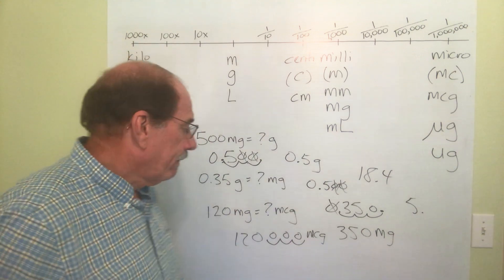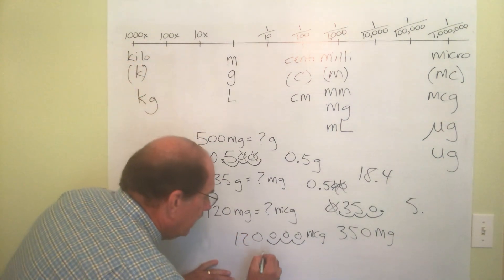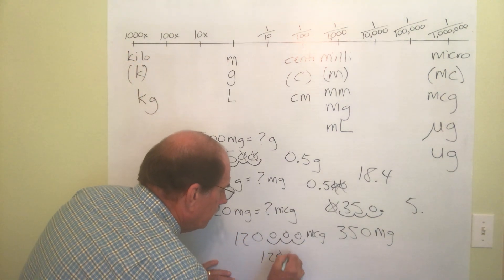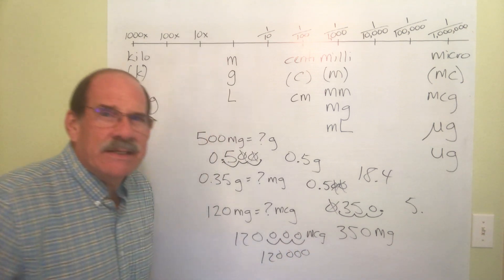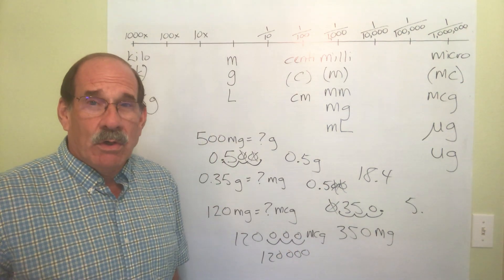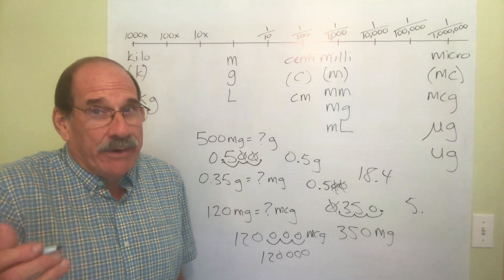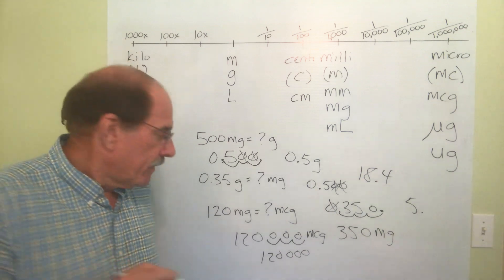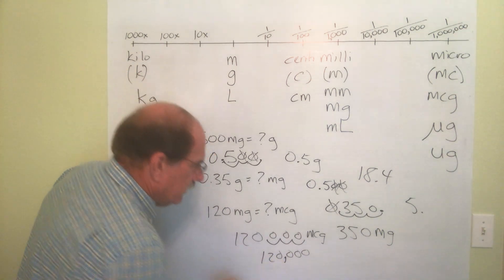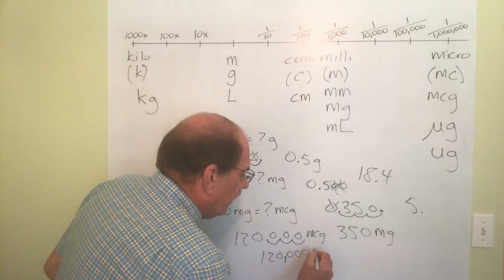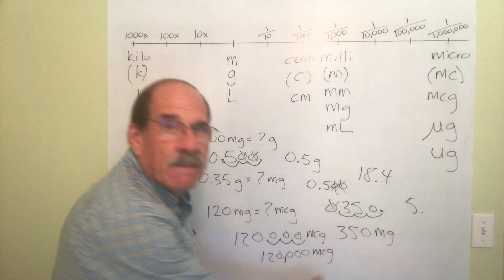Now about writing that number. Anytime a number is a thousand or larger, it's really better to put a comma. The comma goes right there, so 120,000 micrograms.